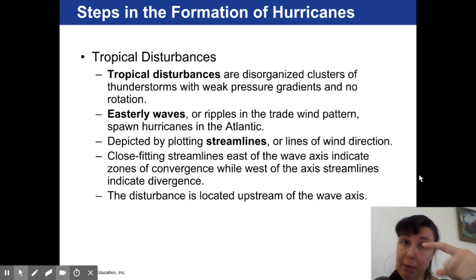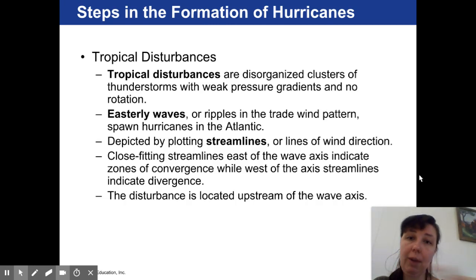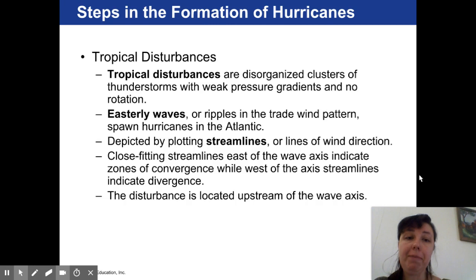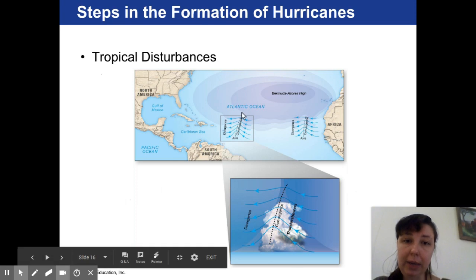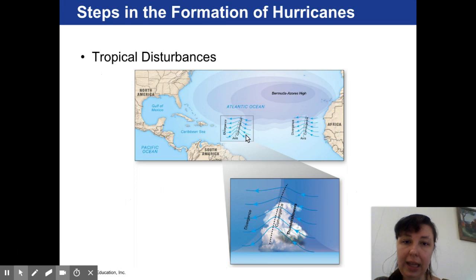Reviewing what we know: the Hadley cell sits between the band of low pressure at the intertropical convergence zone and the subtropical high pressure zone around 30 degrees north latitude. All of that air mass naturally moves from east to west, and this location is known as the easterly waves. A large easterly wave — a band of low pressure — gives us a place where a tropical storm can formulate.